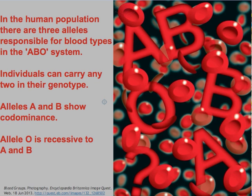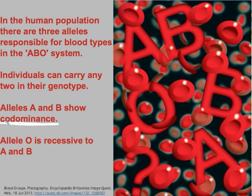The three alleles that determine the ABO system are: the allele for type A blood, the allele for type B blood, and the allele for type O blood. For a given individual, there can only be a pair of these alleles in the genotype. When a person possesses both A and B, neither allele is dominant nor recessive — they both express themselves at the same time, and when this occurs we refer to that as co-dominance. Allele O is recessive to both A and B.